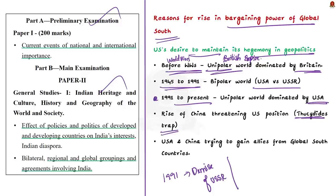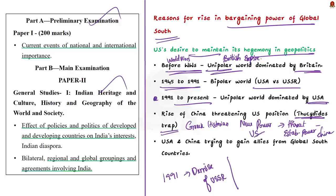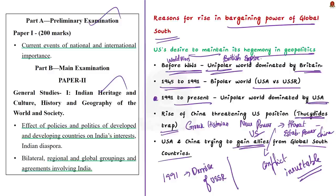This scenario is called the Thucydides trap. Thucydides was a Greek historian who lived in the fourth century BCE. He said when a new power is rising which threatens an already established power, war or conflict is inevitable — and this is the Thucydides trap. Here, the established power is the US and the rising new power is China. Based on this hypothesis, a conflict is inevitable. So both China and the US are seeking allies who will stand by them when conflict eventually arises, meaning both are trying to win over countries from the Global South.